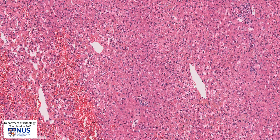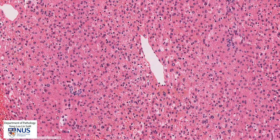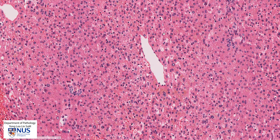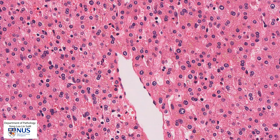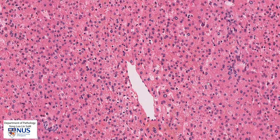This is a central vein. We can see that there are hepatocytes arranged in slender trabeculae, usually around one cell thick, at most perhaps two cells thick. The hepatocytes are quite polygonal in shape. They have rounded nuclei, which are fairly uniform, with very smooth nuclear membranes and granular cytoplasm, and they have quite abundant cytoplasm.